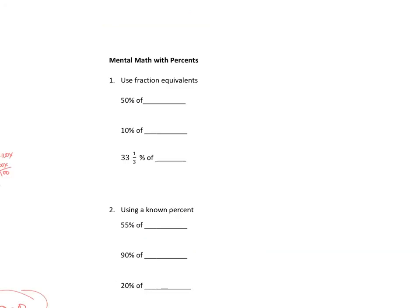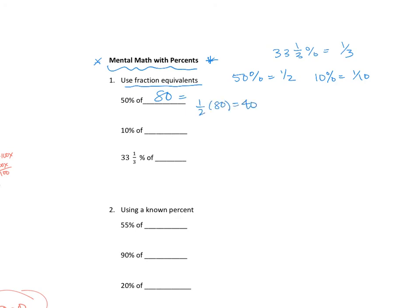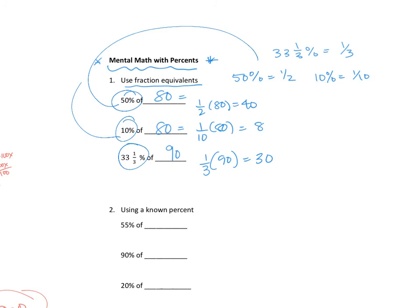For this last page, we're doing a little bit of mental math — a really useful skill, like when you're shopping or buying something on sale. Using fraction equivalents: when you see 50%, you think half off. Or 10% — that means taking one-tenth of it. Even 33 and a third percent is equal to one-third. So if I ask for 50% of 80, that's just half of 80, which is 40. For 10% of 80, that's just one-tenth, which is dividing by 10 — that makes 8. For 33 and one-third percent, let's use 90: one-third of 90 is 30.